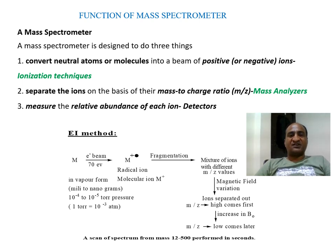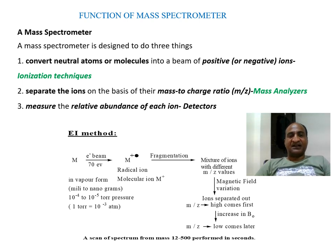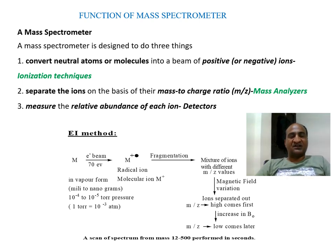The three main functions of the mass instrument are: first, it converts neutral atoms or molecules into positively charged ions — this is carried out through different ionization techniques. Second, once the ions are formed, those ions are separated based on their mass-to-charge ratio using the mass analyzer. Third, the measurement of those separated ions based on relative abundance using detectors. So the three functions are: conversion of neutral molecules into positive ions, separation of the ions, and measurement of the ions.